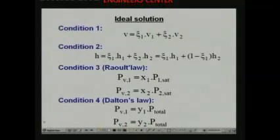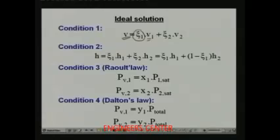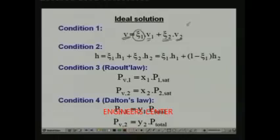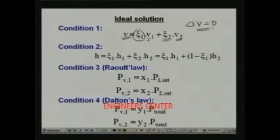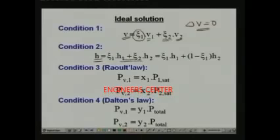Condition 1: the specific volume of the solution equals the sum of the specific volumes of the components — psi_1·V_1 plus psi_2·V_2, where psi_1 and psi_2 are mass fractions and V_1, V_2 are specific volumes of components 1 and 2. This means the solution neither expands nor contracts — there is no volume change upon mixing. Condition 2: since no heat is released or absorbed, the specific enthalpy of the solution equals the weighted average of the enthalpies of components 1 and 2.